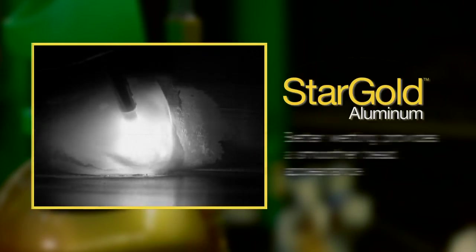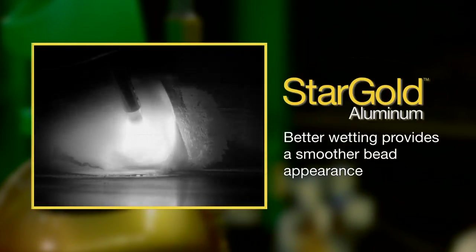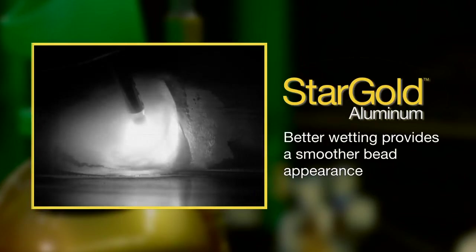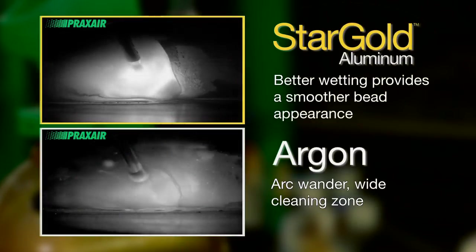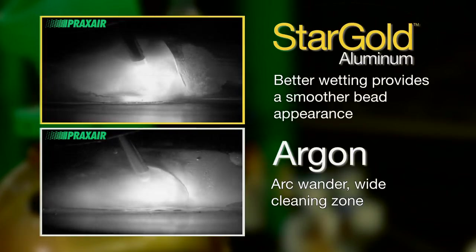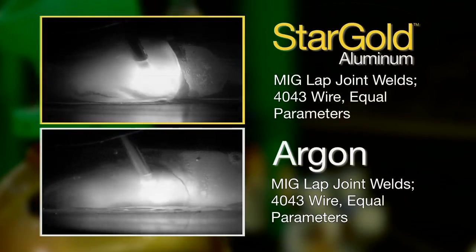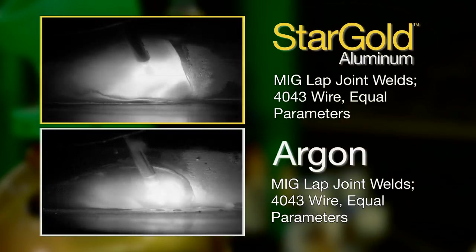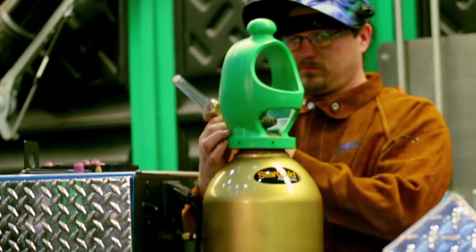Using Stargold Aluminum shielding for MIG welding, this video shows a more consistent, stable arc producing better wetting characteristics and a smoother bead appearance. When argon-only shielding is used, inconsistent metal transfer with occasional wire shorting can result in excess spatter and a rough bead appearance.